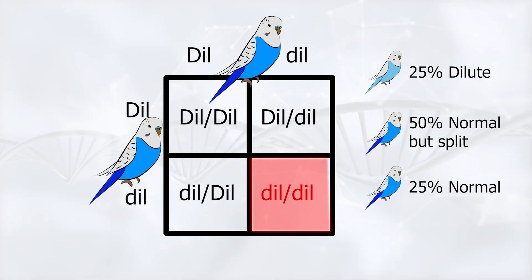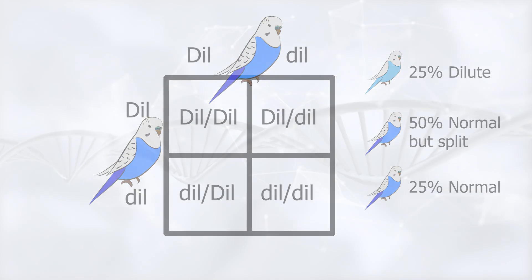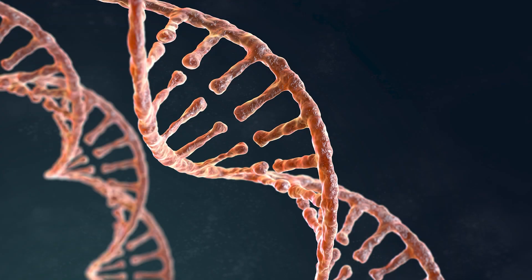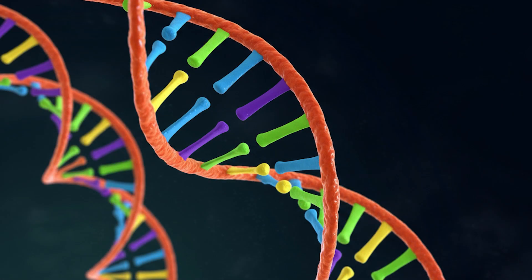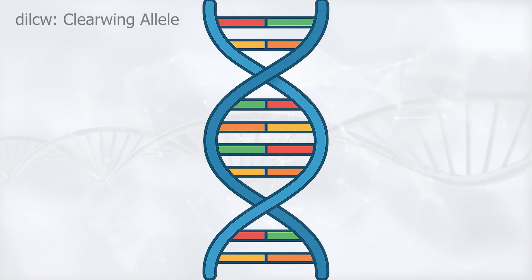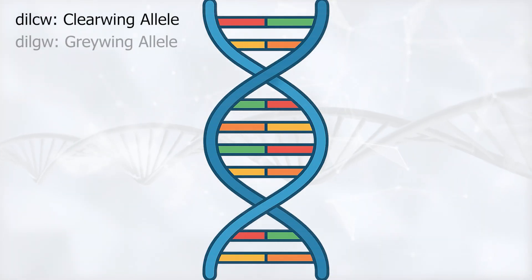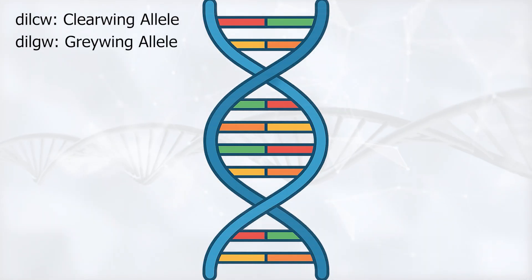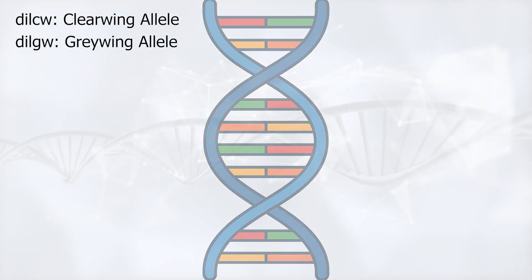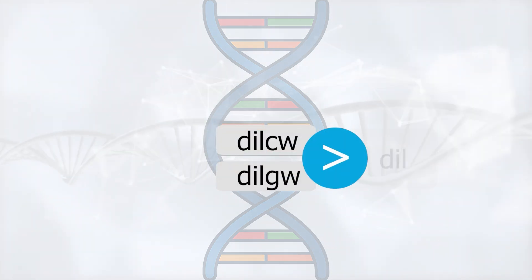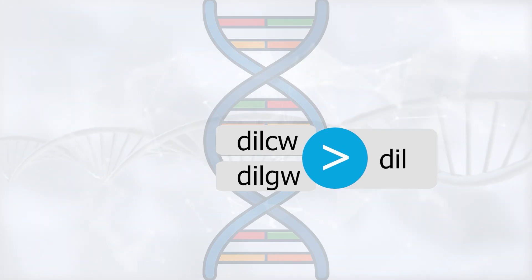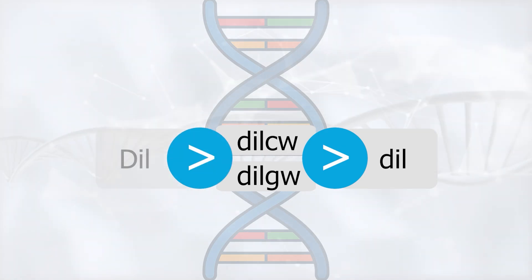And now we get to the really interesting part. The dilution gene doesn't just have one recessive allele. In fact, there are multiple alleles competing for that same spot on the DNA. Besides the basic recessive dil, there are two special versions: dil-CW, the clearwing allele, and dil-GW, the graywing allele — I'll just call them CW and GW for convenience. These alleles are co-dominant with each other, but they are dominant over the basic recessive dil. At the same time, they are still recessive to the normal dominant Dil allele.